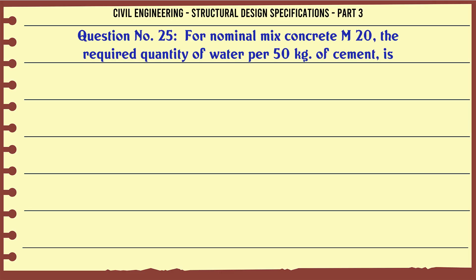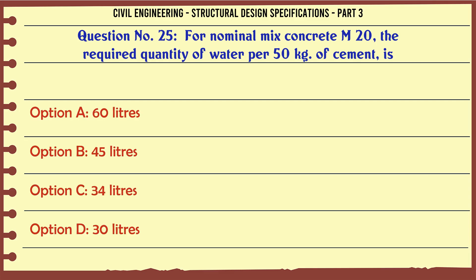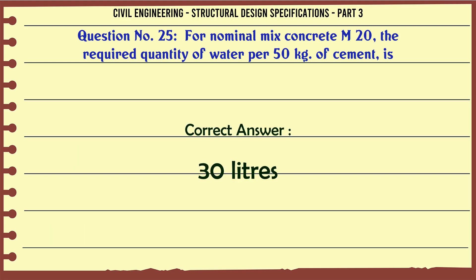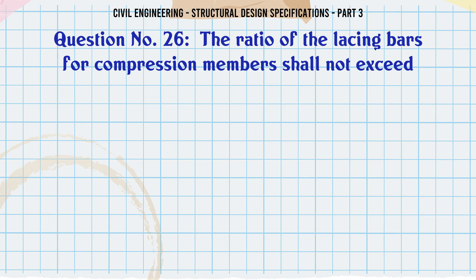For nominal mix concrete M20, the required quantity of water per 50 kg of cement is: a. 60 liters, b. 45 liters, c. 34 liters, d. 30 liters. The correct answer is: 30 liters.